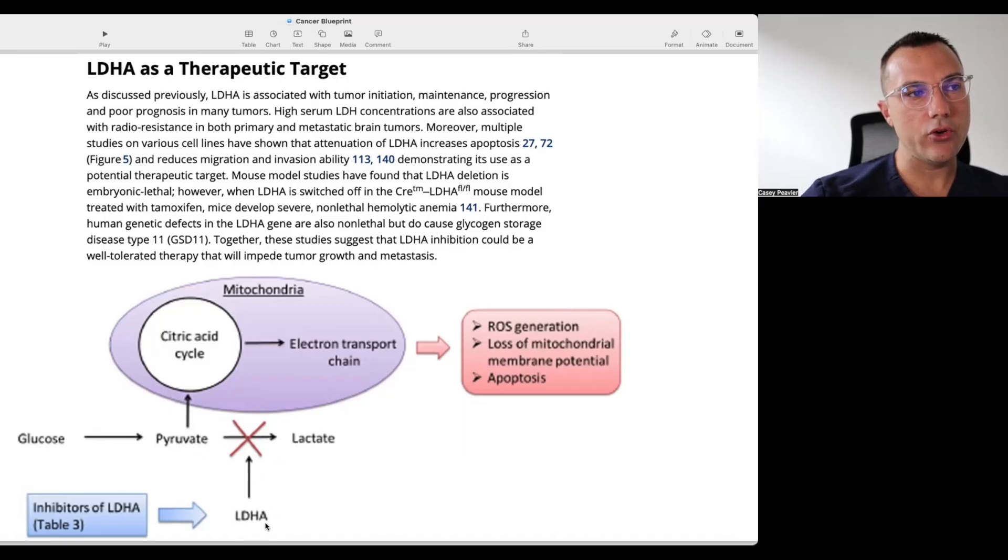In between pyruvate and lactate we have LDHA or lactate dehydrogenase A and this is the enzyme that we're looking at trying to potentially inhibit as a way to enhance ketogenic metabolic therapy. What we see here is that potentially when LDHA is inhibited then pyruvate cannot get to lactate it's not being able to be transformed into lactate through that enzymatic reaction and so what happens is some of that pyruvate is still going to get into the TCA cycle and it's going to be basically putting energy or gasoline through a broken mitochondria and a broken electron transport chain and what that's going to do is that's going to generate reactive oxygen species you're going to lose mitochondrial membrane potential and it's going to lead to apoptosis.